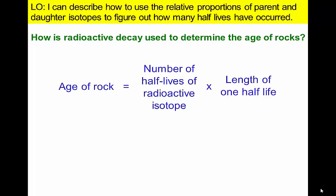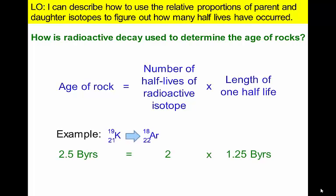For example, one half-life for the decay of potassium-40 to argon-40 takes 1.25 billion years. If we analyze the relative proportions of potassium-40 and argon-40 and determine that two half-lives have occurred, we would know that the rock was 2.5 billion years old.